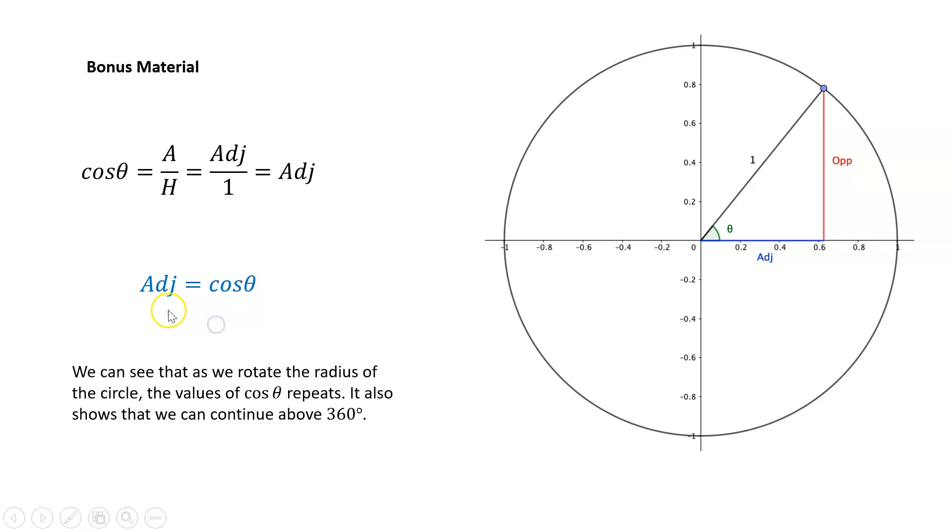Therefore, the cos theta is equal to the blue line. We can see that as we rotate the radius of the circle, the value of cos theta repeats. It also shows we can continue above 360.